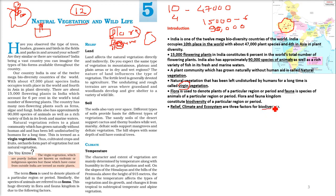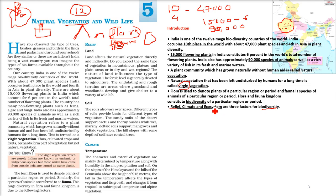What are the important factors of biodiversity — how does diversity arise in terms of plants and animals? There are three factors: first is the relief, that is the height or steepness. Second is climate. Third is ecosystem.